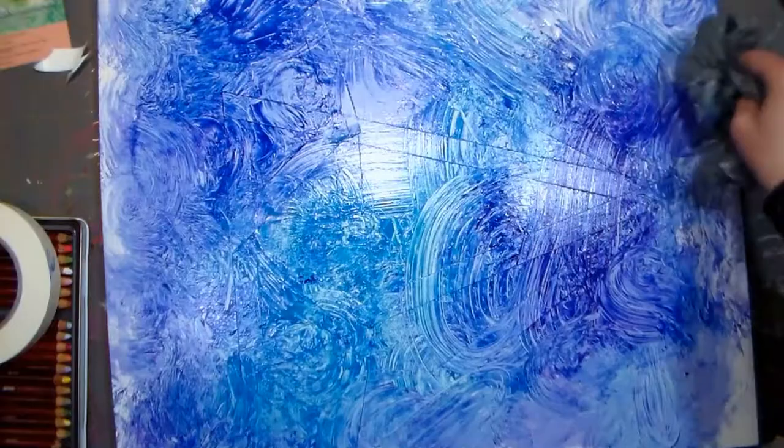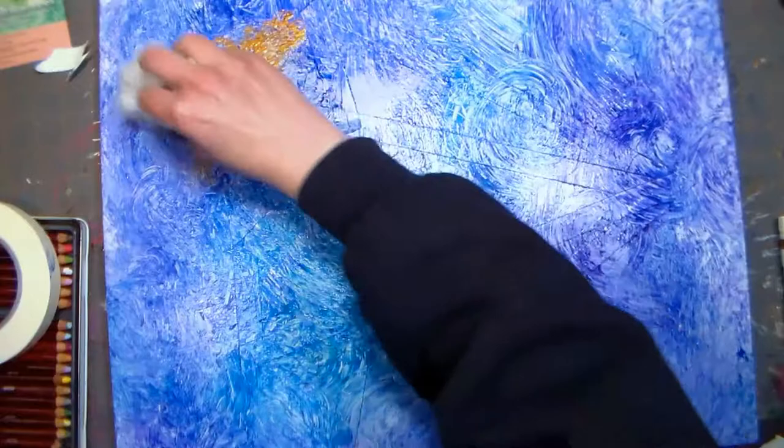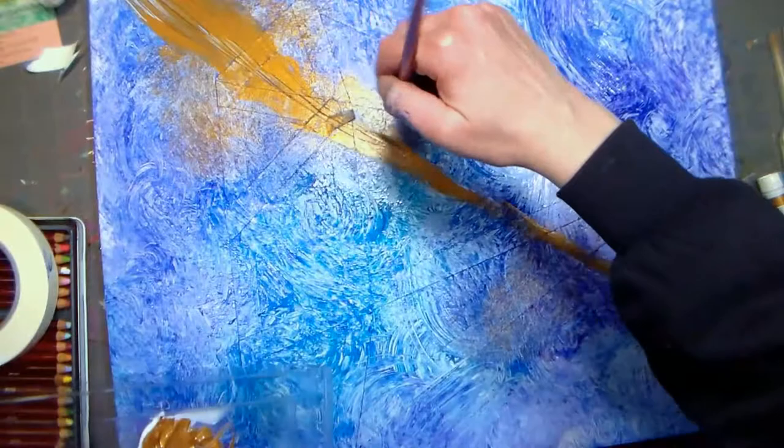Now here's kind of where it started to go terribly wrong. I grabbed some gold paint and some more gloss medium and started pouncing it on there, but I really didn't like that. I thought maybe it would be cool to have a couple gold stripes going through there, and I really wasn't crazy about that either, and at this point I figured I had nothing left to lose.